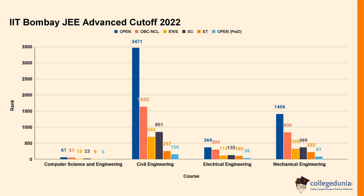For Electrical Engineering at IIT Bombay in 2022, cut-off rank was 369 for Open category, 304 for OBC-NCL, 114 for EWS, and 135 for SC. For Mechanical Engineering, cut-off rank was 1406 for Open category, 8366 for OBC-NCL, 328 for EWS, and 369 for SC.